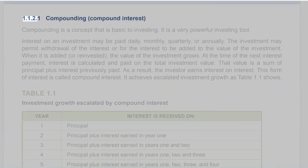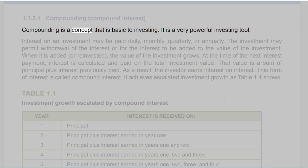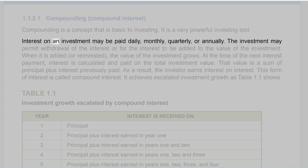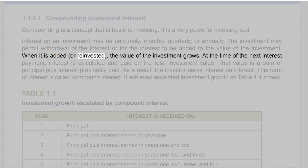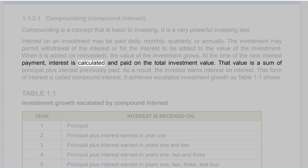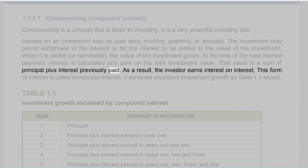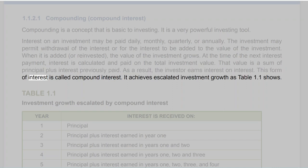Section 1.1.2.1: Compounding. Compounding is a concept that is basic to investing and a very powerful investing tool. Interest on an investment may be paid daily, monthly, quarterly, or annually. When interest is added or reinvested, the value of the investment grows. At the time of the next interest payment, interest is calculated on the total investment value — a sum of principal plus interest previously paid. As a result, the investor earns interest on interest. This form of interest is called compound interest, and it achieves escalated investment growth.